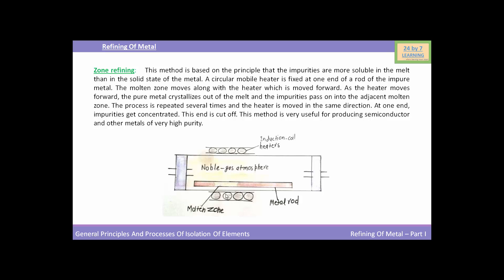As the heater moves forward, the molten zone also moves in the same direction. Since impurities are more soluble in the molten zone, pure metal is present behind the molten zone. The molten zone moves forward along with the heater, and the process is repeated several times with the heater moved in the same direction. At the end, impurities get concentrated at one end, and this end is cut off. By this method, very high purity of metal is obtained.